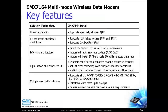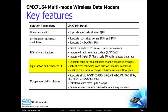The CMX7164 feature set greatly simplifies the development of wireless data products. Both linear modulations and constant envelope modulations are supported. The integrated radio interface codec allows the CMX7164 to directly connect to IQ radio transceivers, and the integrated digital IF filter bandwidth and frequency response automatically change with baud rate and modulation type. Equalization and FEC allow robust data performance even in harsh signal environments, and the wide variety of modulation types and data rates adds to the flexibility that the CMX7164 provides.